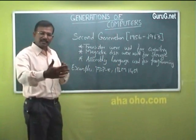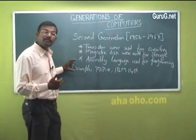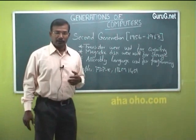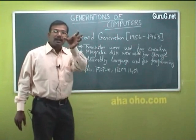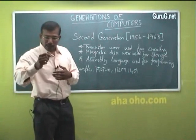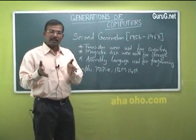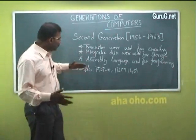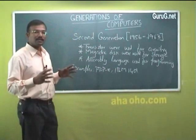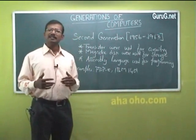A key improvement from the first generation was the introduction of assembly language. Assembly language uses mnemonic codes, which are easier to remember and understand compared to binary coded language. These are the advantages of the second generation computer. Examples of second generation computers include the PDP and IBM 1401.